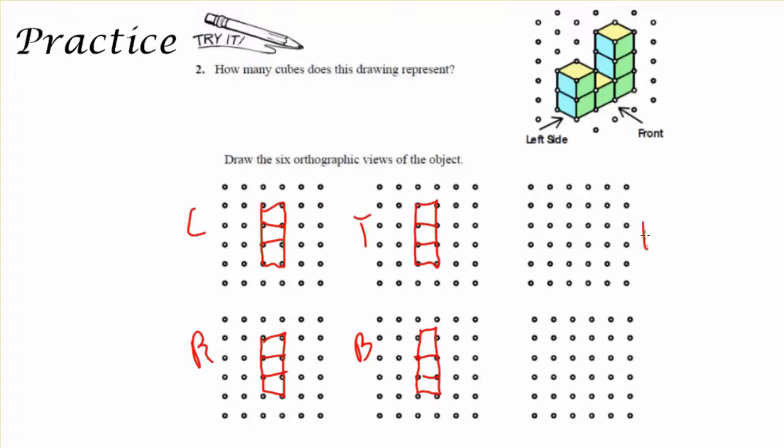Now where we get some change is if I look at it from the front. Because from the front side I know that the left side of my front is only two cubes tall and the right side is only three cubes tall. And if I were to do it from the back side, this would be flipped. The left side would be three cubes tall and the right would be two cubes tall.